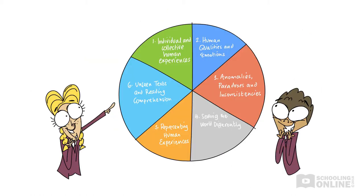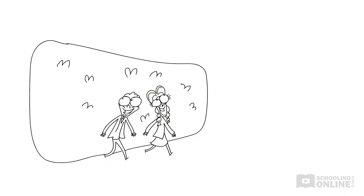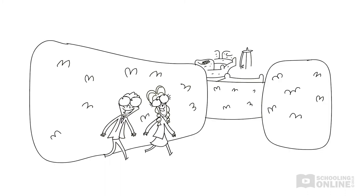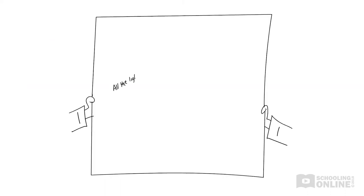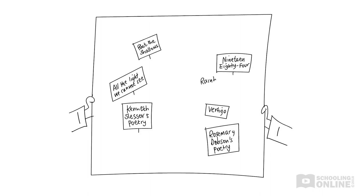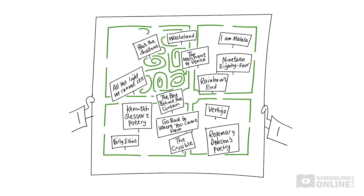Over the course of six videos, we unpack the texts and human experiences rubric in detail so you can achieve a deep understanding of the module. You'll be able to navigate the intricate world of human behaviour and motivations in no time. We'll guide you through your set texts which will help you to develop your own insights and analysis.